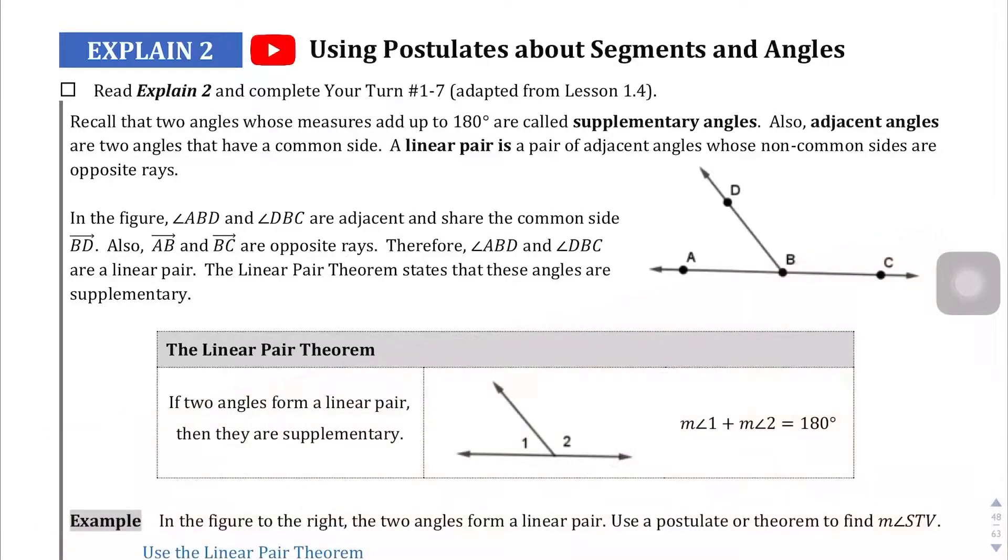We're on page 48 on the Explained 2 section about using postulates about segments and angles. The big new thing here is this linear pair theorem, and all that means is that if we add angles 1 and 2 to create a linear pair, it's going to equal 180 degrees. So when you see linear pair, you should think supplementary angles.